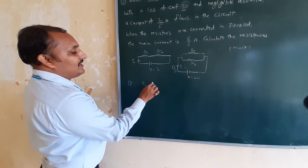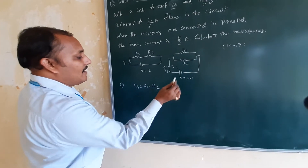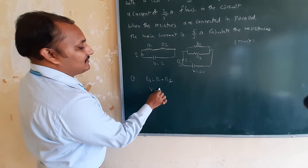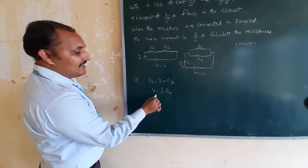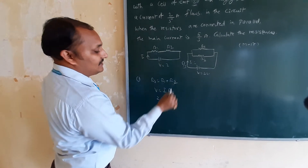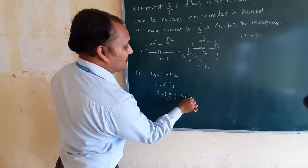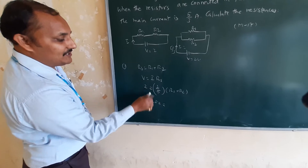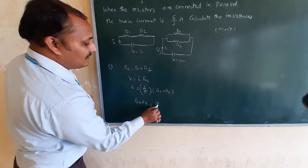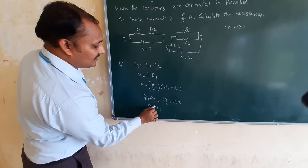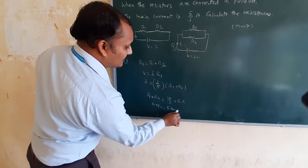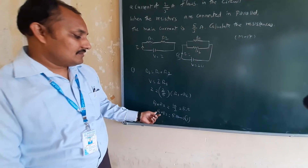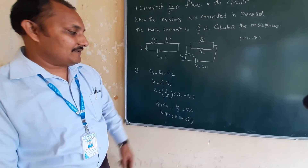First case — resistors in series. Using V = I × Rs: 2 = (2/5) × (R1 + R2). So R1 + R2 = (2 × 5)/2 = 5 ohms. Therefore R1 + R2 = 5 ohms. Call this equation number 1.